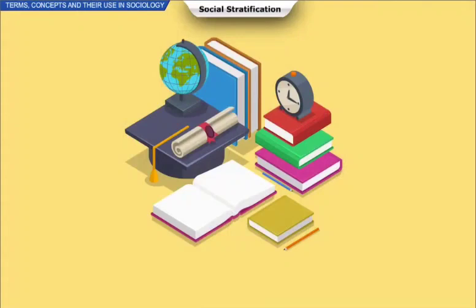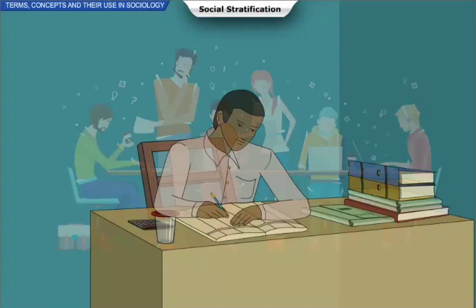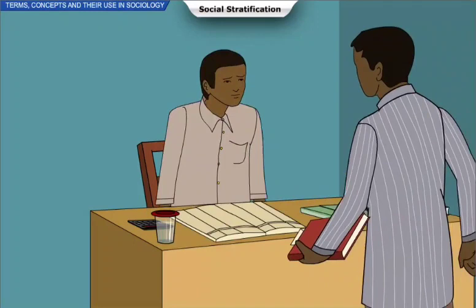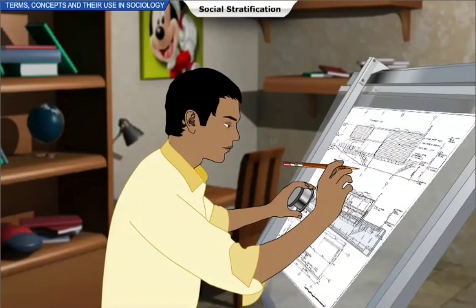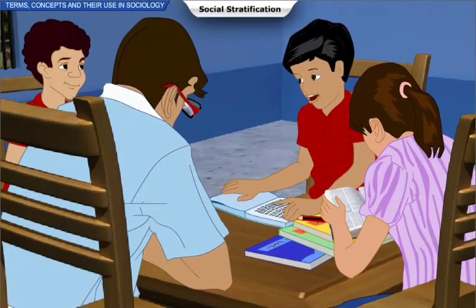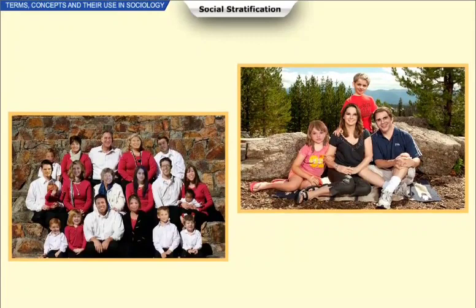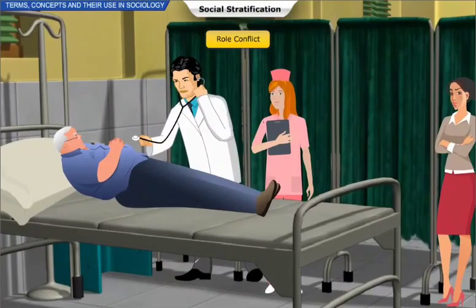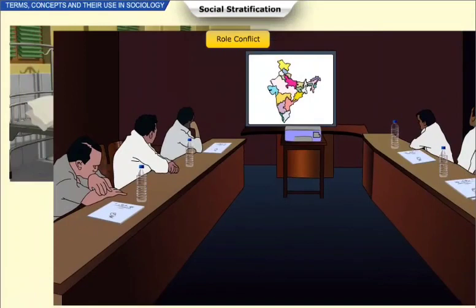An engineer often enjoys higher prestige than a tuition teacher even if the tuition teacher manages to earn more from tuitions. Roles are performed according to social expectations. When an individual faces contrast and discord among multiple roles played by him or her corresponding to one or more statuses held in society, it gives rise to role conflict.